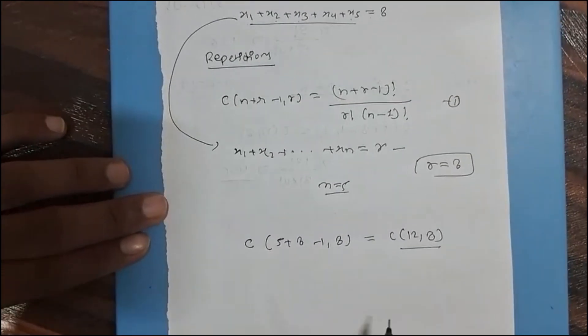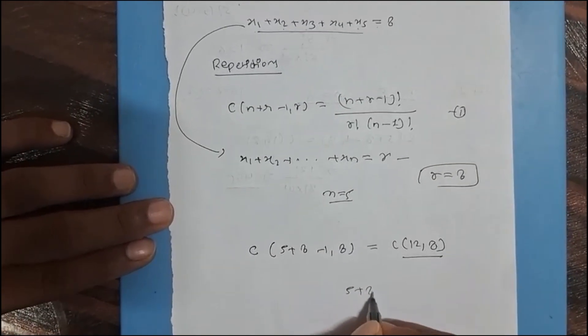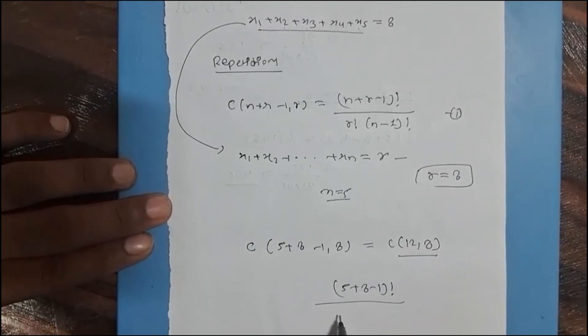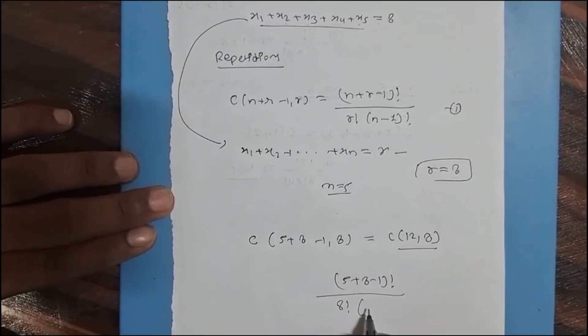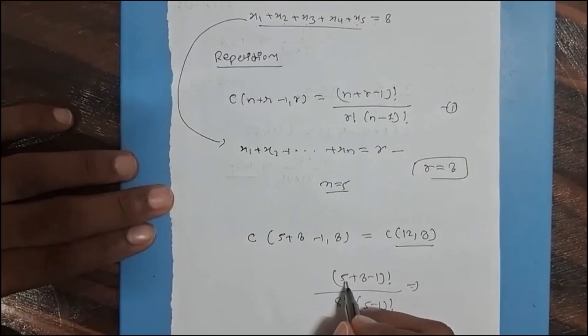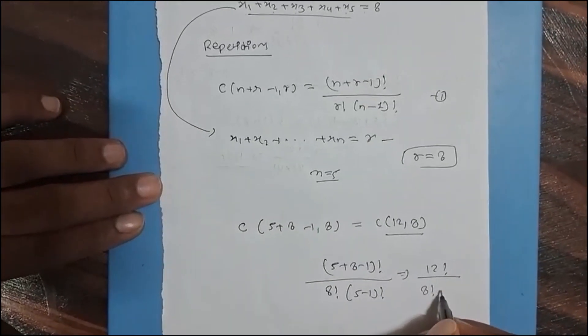5 + 8 - 1 factorial divided by 8 factorial, 5 - 1 factorial. So further we can solve it: 8 + 5 = 13 - 1 = 12 factorial divided by 8 factorial multiply by 4 factorial.